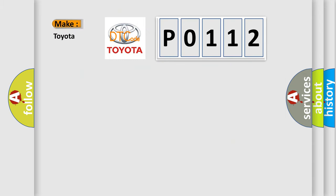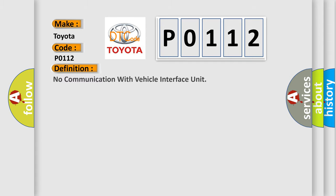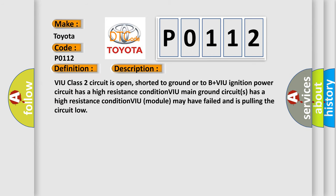What does the diagnostic trouble code P0112 interpret specifically for Toyota car manufacturers? The basic definition is: no communication with vehicle interface unit. The VIU Class 2 circuit is open, shorted to ground, or to B+. The VIU ignition power circuit has a high resistance condition. The VIU main ground circuit has a high resistance condition. The VIU module may have failed and is pulling the circuit low.